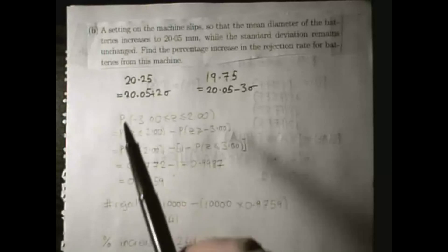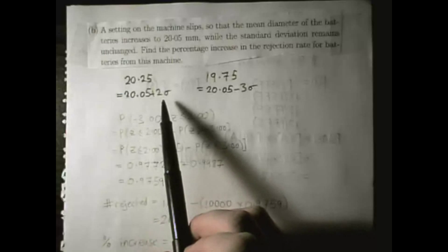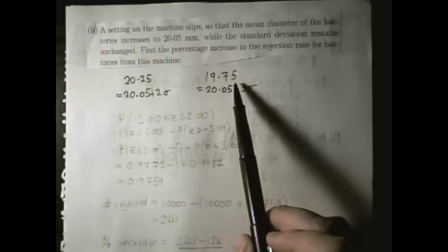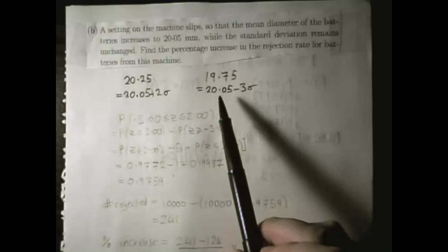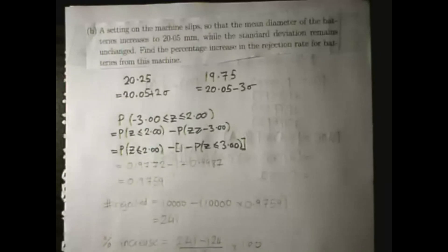Like I said, the 20.25 is this new mean plus 2 standard deviations, the standard deviation being 0.1mm. The 19.75, the other cutoff point, is 20.05 minus 3 standard deviations. Using that information then,